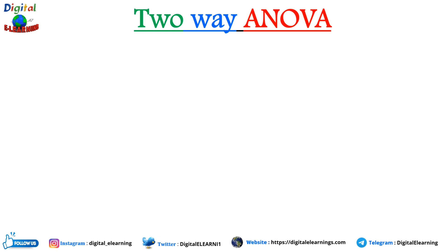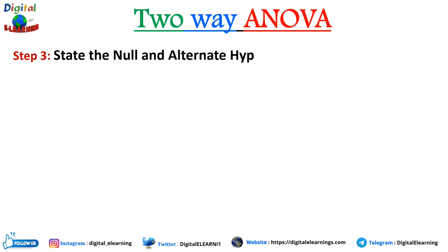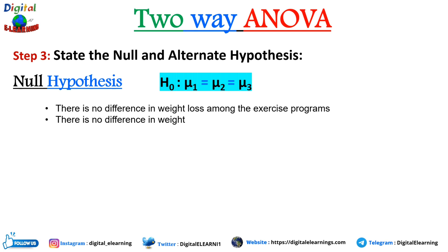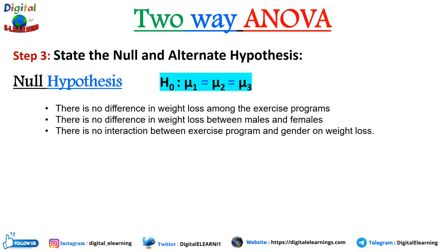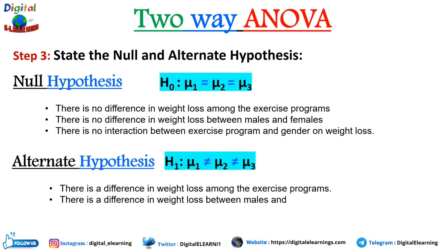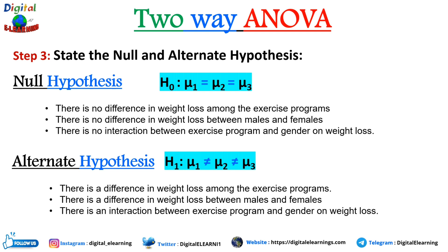Step three: state the null and alternate hypotheses. The null hypothesis H0: mu1 = mu2 = mu3. There are three null hypotheses: there is no difference in weight loss among exercise programs; there is no difference in weight loss between male and female; and there is no interaction between exercise program and gender on weight loss. The alternate hypothesis H1: mu1 ≠ mu2 ≠ mu3 — there is a difference in weight loss among exercise programs, between genders, and there is an interaction between exercise program and gender on weight loss.